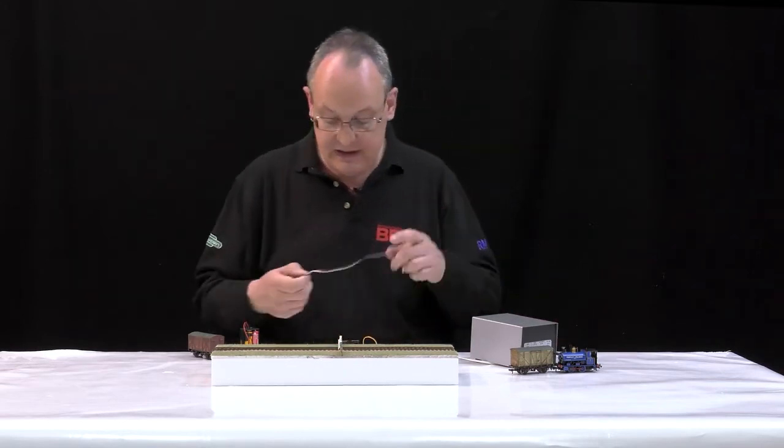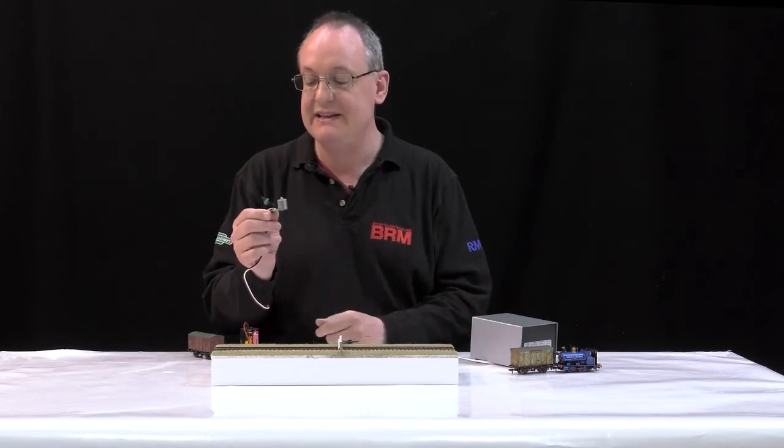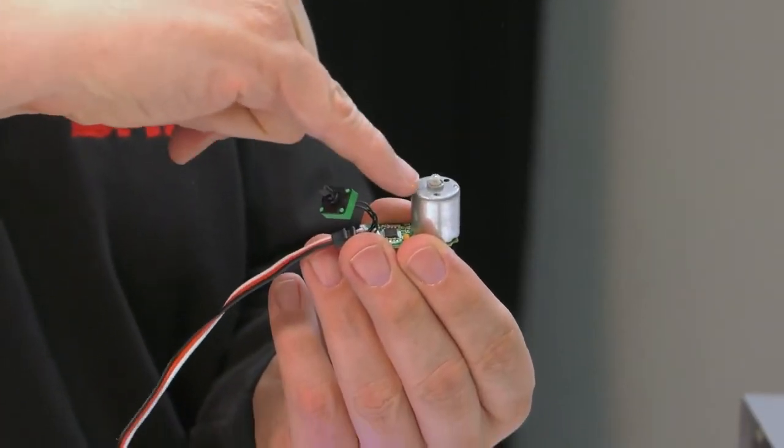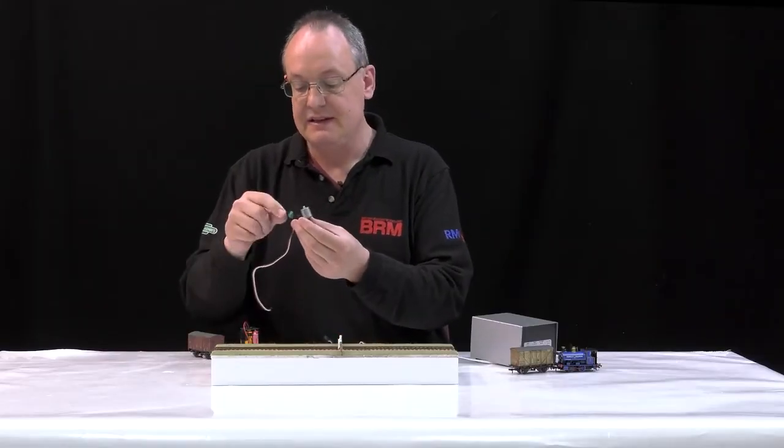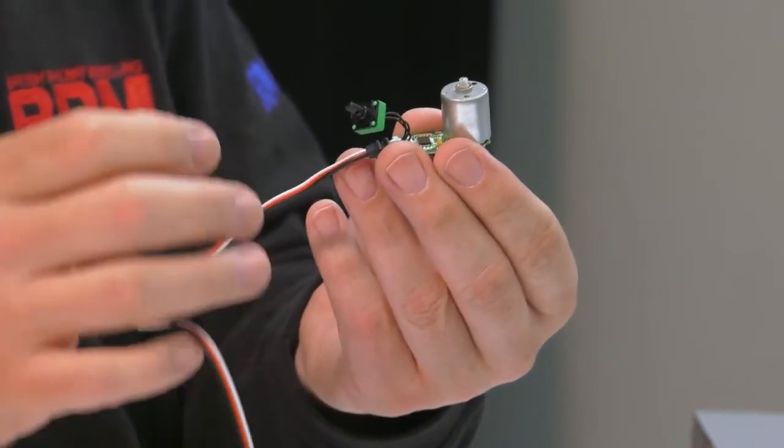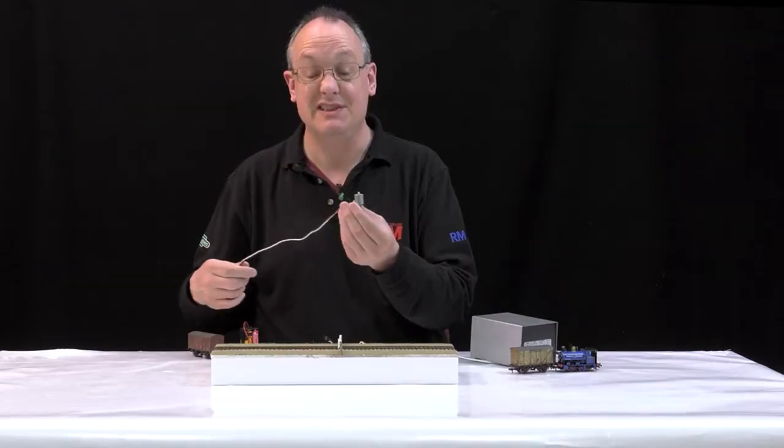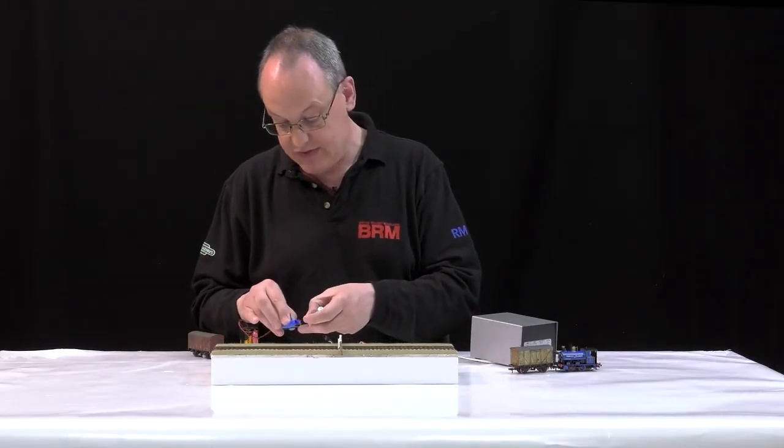The other thing with servos is that you can actually take them to pieces. This is the inside of a servo. There would normally be a set of gears on top of this that drive the top, and that potentiometer is how the model knows where the servo is. So for our purposes we can just ignore it. But it does give us another extra little feature.